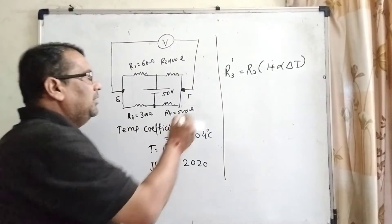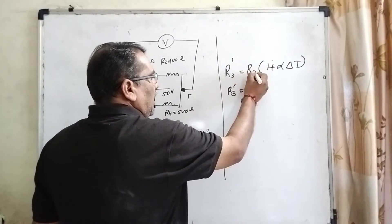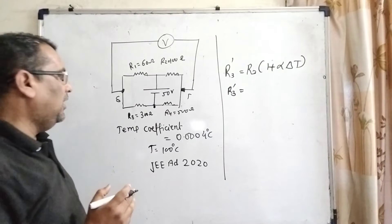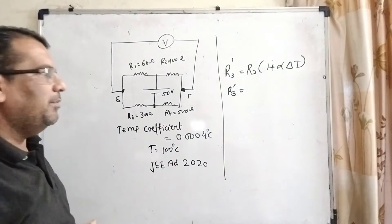So what will be the new resistance R3 dash? R3 dash equals R3 times (1 plus alpha delta T). What is alpha and delta T? Alpha is the temperature coefficient and delta T is the change in temperature.